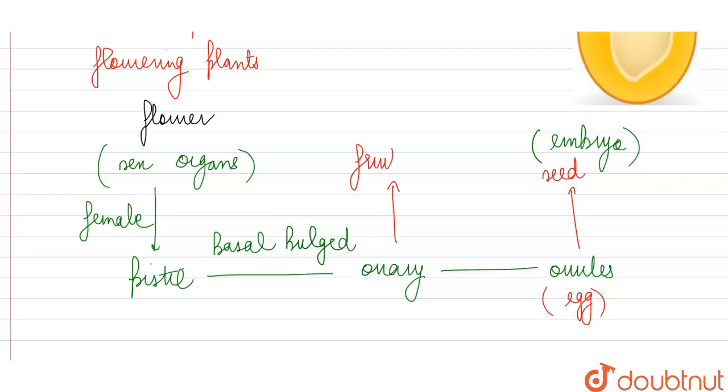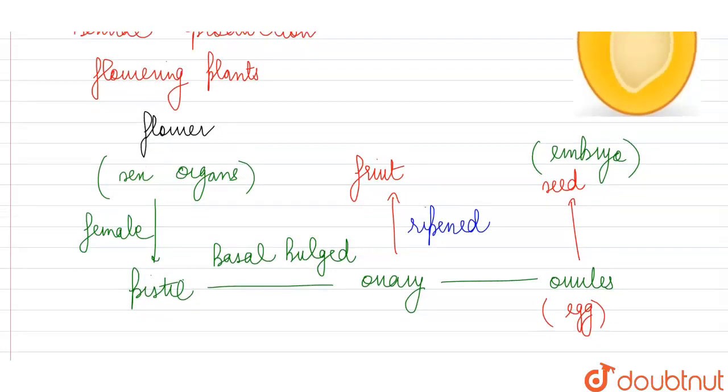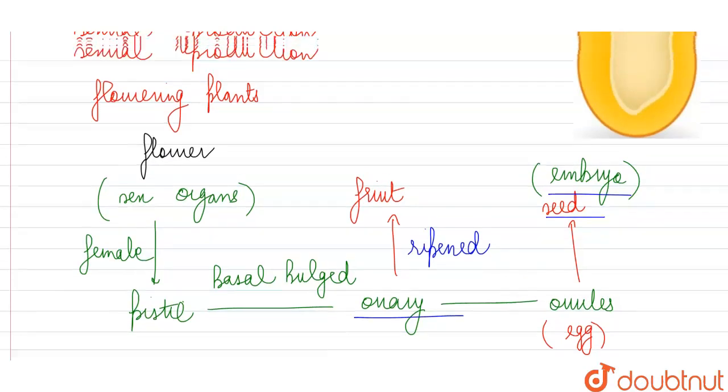So basically, what is a fruit? After fertilization, the ripened ovary of the flower becomes the fruit. So what are we going to find inside the fruit? We'll find the embryo, we'll find the seed, and apart from this we will find the walls of the ovary enclosing this seed.